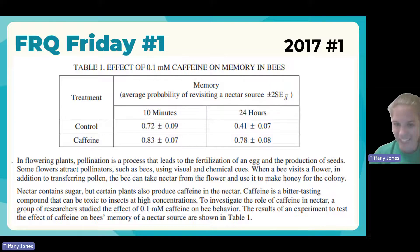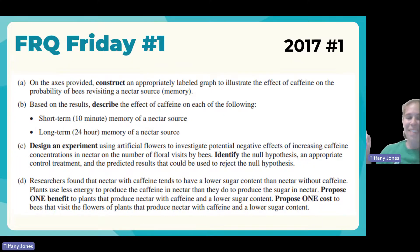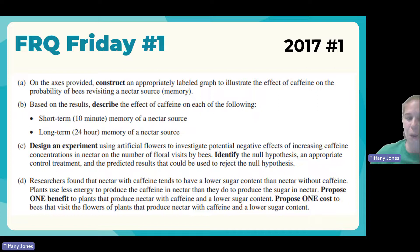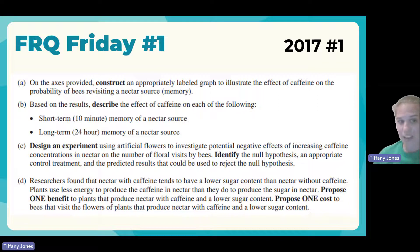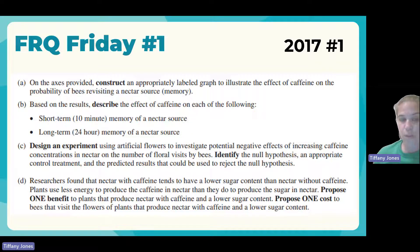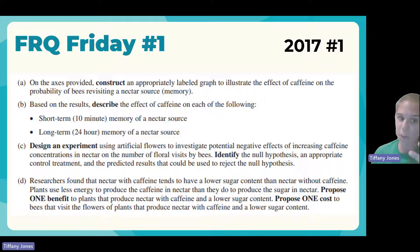They ask us several questions. Long FRQs and short FRQs always have four parts: A, B, C, and D. Long FRQs are worth eight to ten points, while short FRQs are only four points.